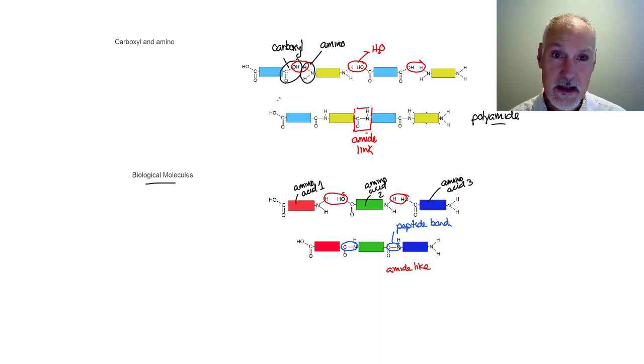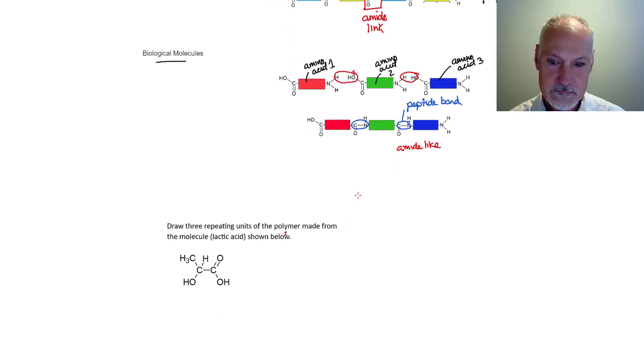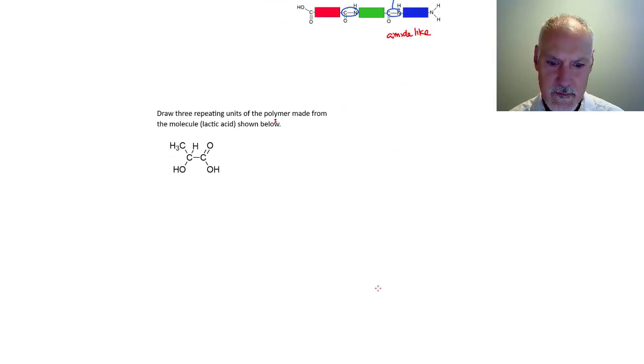Let's employ some of our understanding of condensation polymerization with this question. Here, we're asked to draw three repeating units of the polymer made from lactic acid. So, I'm going to start off by drawing the molecule such that the functional groups are facing each other.